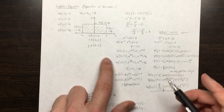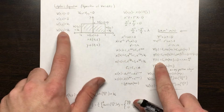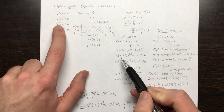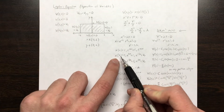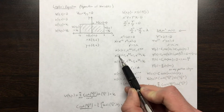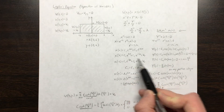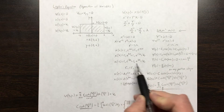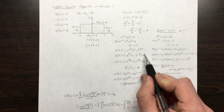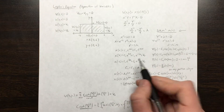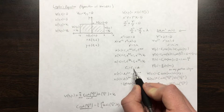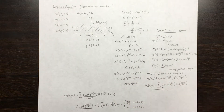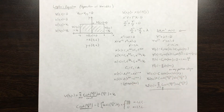Now we apply the boundary conditions. The x boundary conditions are at x = b and x = -b, both equal to the constant v-naught. Substituting b into the x solution gives one equation, and substituting -b gives another. Since both are equal to v-naught, we can set these equal to each other and solve, finding that c1 equals c2, which I'll rename as the constant a.